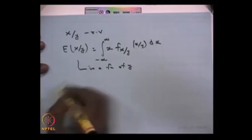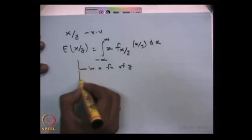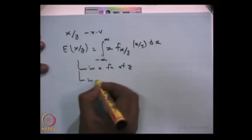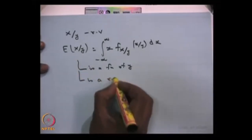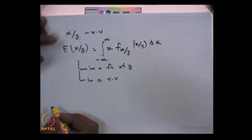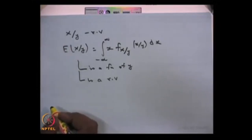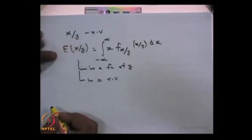Not only is this a function of y, the conditional expectation is also a random variable. X given Y is a random variable; the expectation of X given Y is a function of y, and since y is a random variable taking different values, the expectation of X given Y is also a random variable.